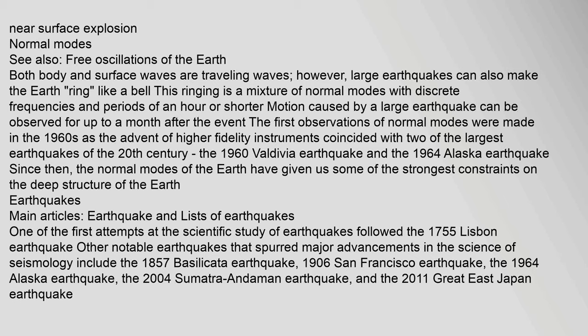Both body and surface waves are traveling waves; however, large earthquakes can also make the Earth ring like a bell. This ringing is a mixture of normal modes with discrete frequencies and periods of an hour or shorter. Motion caused by a large earthquake can be observed for up to a month after the event. The first observations of normal modes were made in the 1960s, when higher-fidelity instruments coincided with two of the largest earthquakes of the 20th century: the 1960 Valdivia earthquake and the 1964 Alaska earthquake. Since then, normal modes have given us some of the strongest constraints on the deep structure of the Earth.